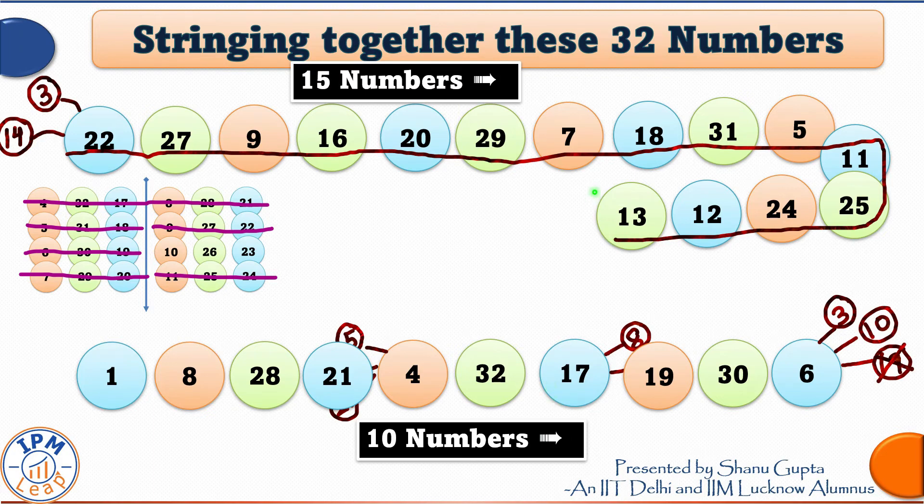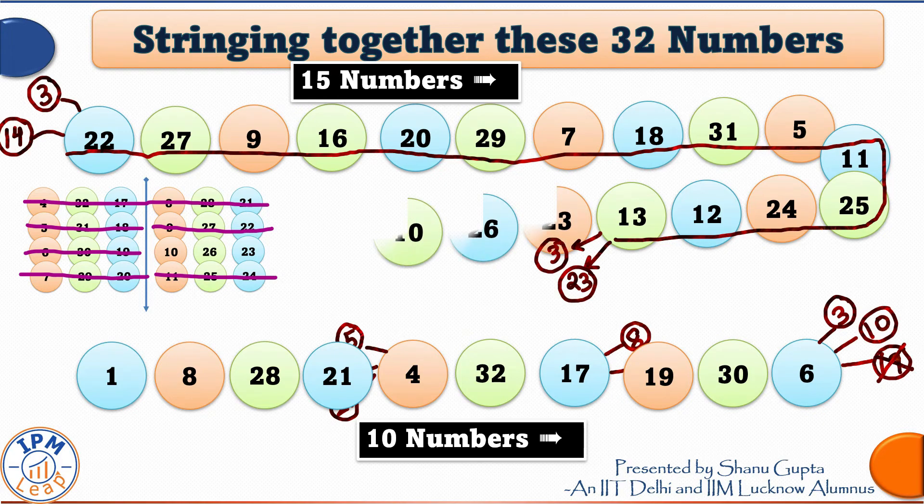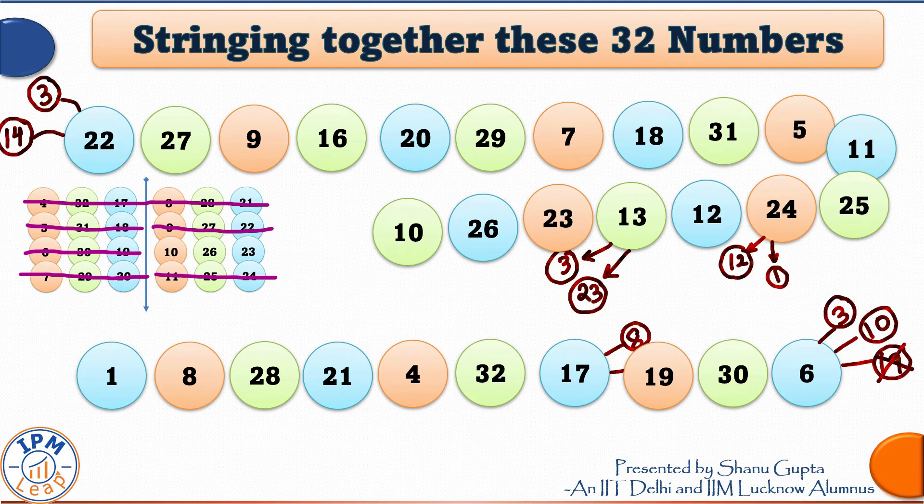Let us focus on 13. 13 can be followed by 3 or by 23. So, let's pick 23. Because 23, 26 and 10 is the only triplet that is remaining. Wow. Now, we have 18 plus 10, 28 numbers that have been accounted for. 28 numbers accounted for. Only 4 more numbers to go.